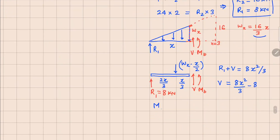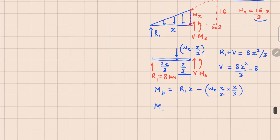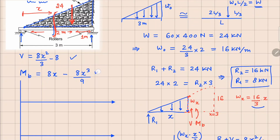Now looking at your bending moment, taking moment about the cut point: MB equals R1 times X minus the distributed force WX·X/2 times its moment arm X/3. Simplifying, MB equals R1·X which is 8X, and substituting 16/3 for WX gives the term 8X³/9. So MB = 8X − 8X³/9, a cubic equation.